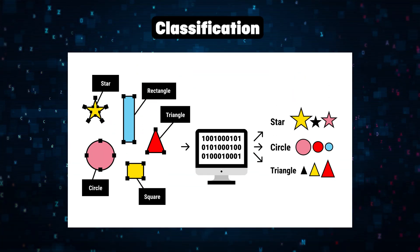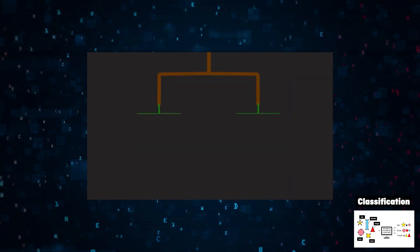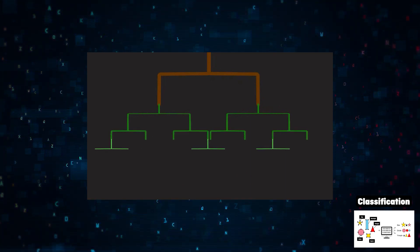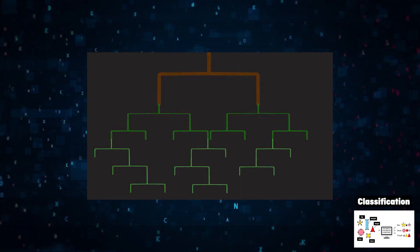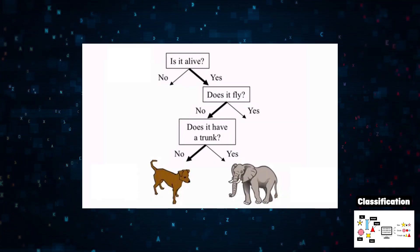So the first one we'll talk about is classification, and a popular algorithm there is decision trees. A decision tree is a type of model used in machine learning that makes decisions based on a series of questions or tests. Imagine you're playing a game of 20 questions. You might start with broad questions like, is it alive?